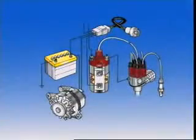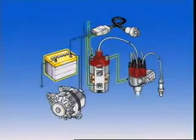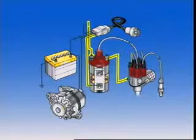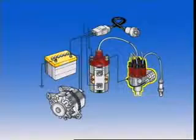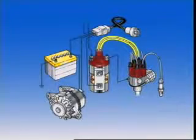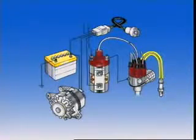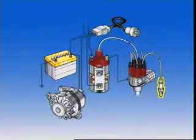This section examines ignition. A basic ignition system consists of the battery, low tension cables, the ignition coil, distributor, coil high tension cable, spark plug cables, and spark plugs.